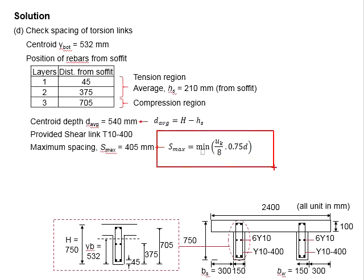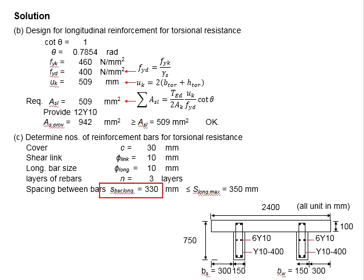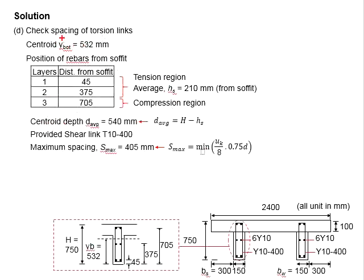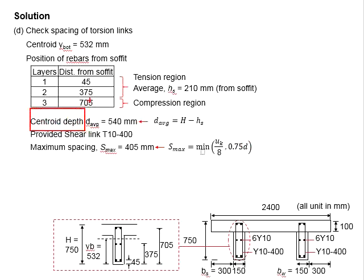The maximum spacing for torsional links is defined by this equation. This spacing is not to be confused with the spacing between the longitudinal torsional resistance bar — it refers to the spacing between the longitudinal reinforcement bars and also to the spacing provided for the shear links. The maximum spacing is the smaller value of the perimeter divided by 8 or 0.75 times the effective depth, where effective depth is defined by the centroid depth of the tension reinforcement bar.